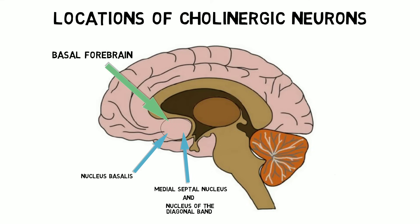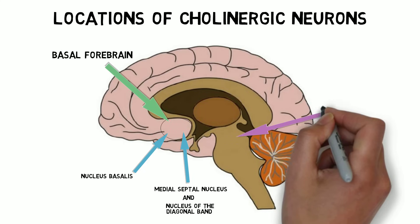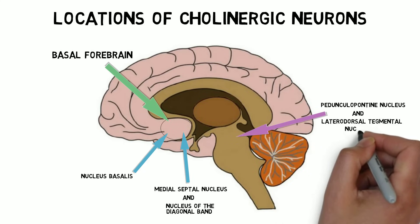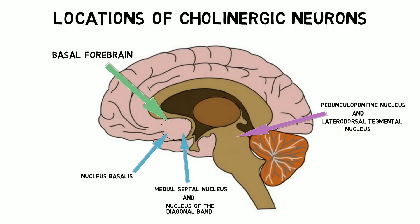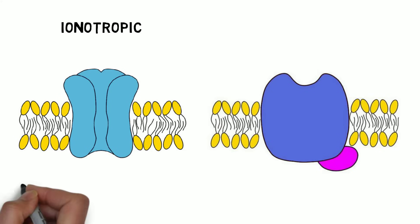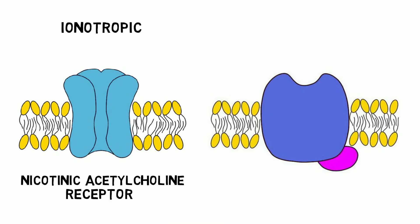Others are found in the brainstem, including the pedunculopontine nucleus and lateral dorsal tegmental nucleus. Acetylcholine acts on two families of receptors, each with several subtypes. One family is ionotropic — called nicotinic acetylcholine receptors because nicotine also binds to and activates them. Their activation generally results in excitation of the neuron.